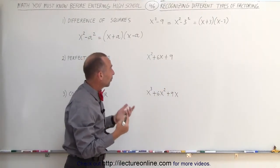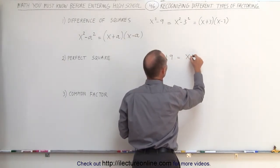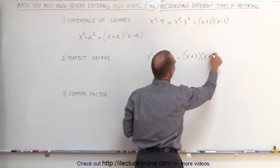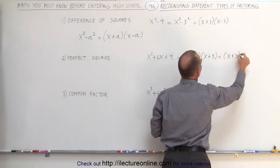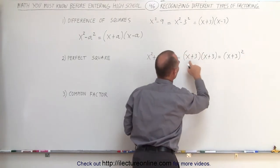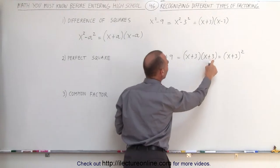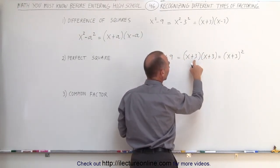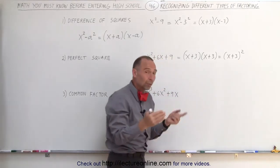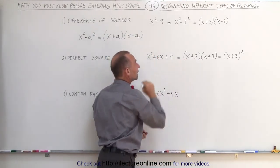If it's a perfect square, then we can write it as the quantity x plus 3 times x plus 3, or simply the quantity x plus 3 squared. When you multiply this together, notice x times x gives you x squared, 3 times 3 gives you 9, and x times 3 gives you 3x, and 3 times x gives you 3x. 3x plus 3x together is 6x. Therefore, we can see that these are equal to one another.